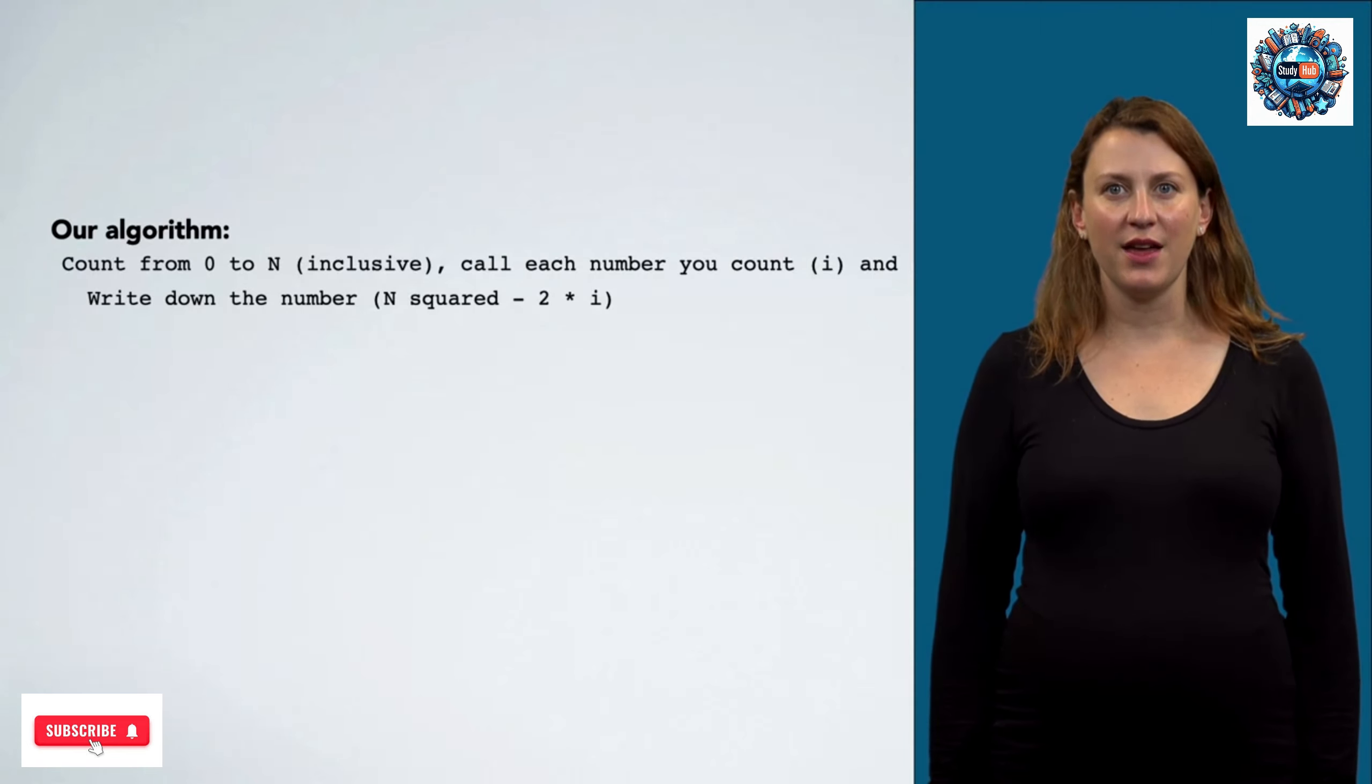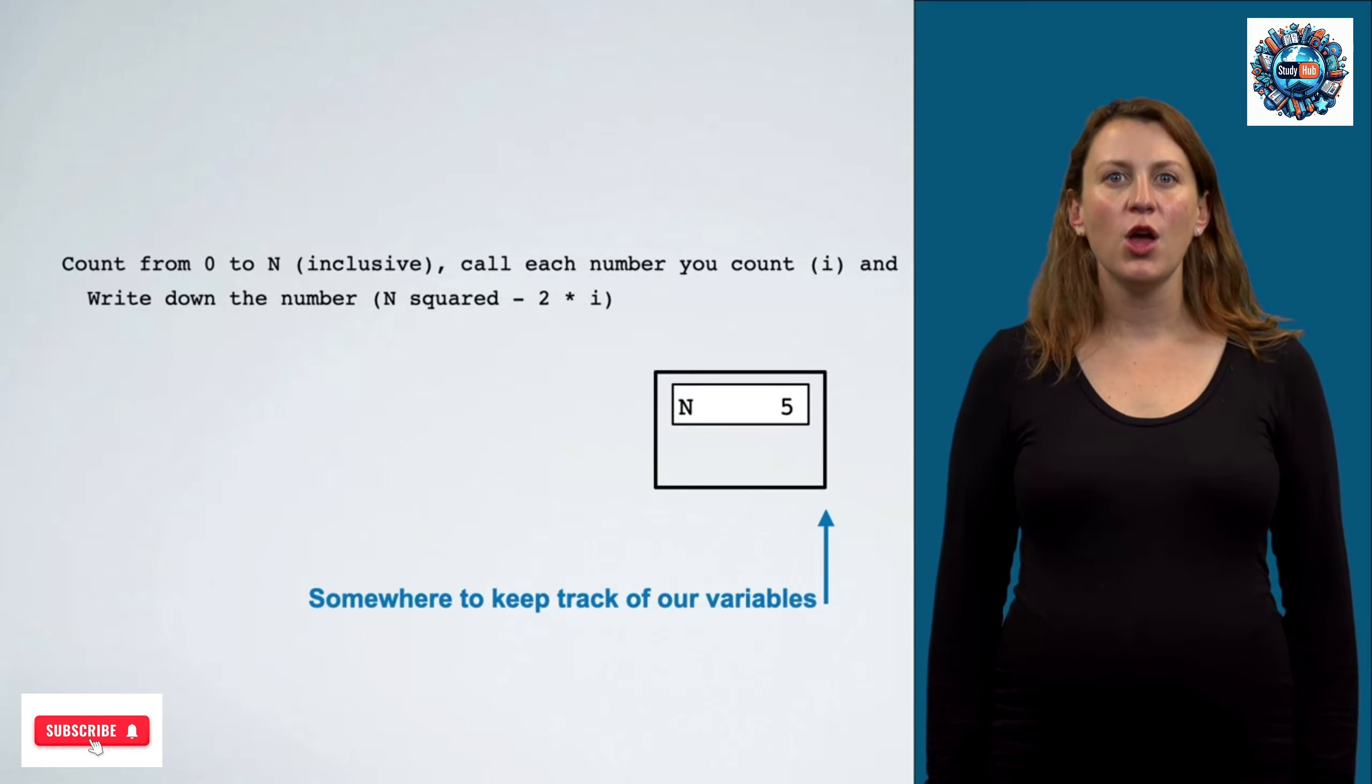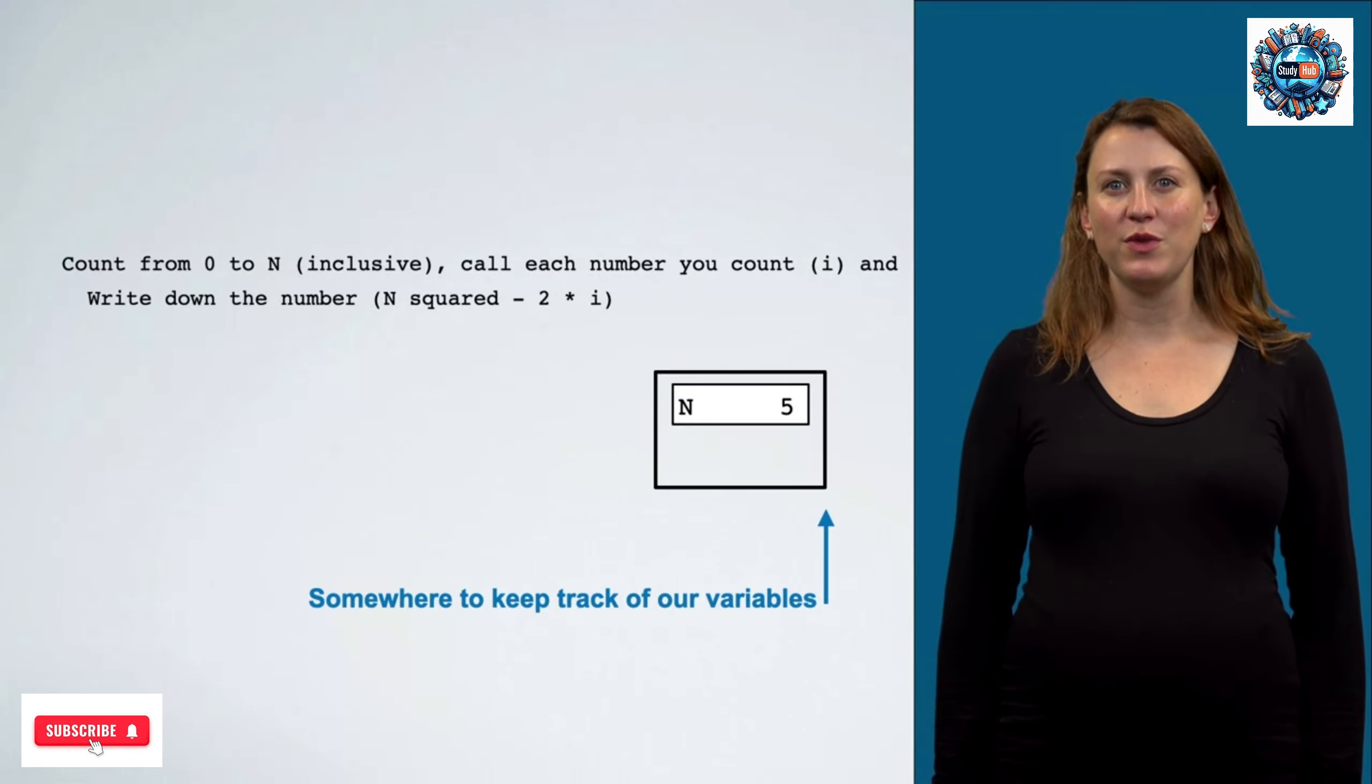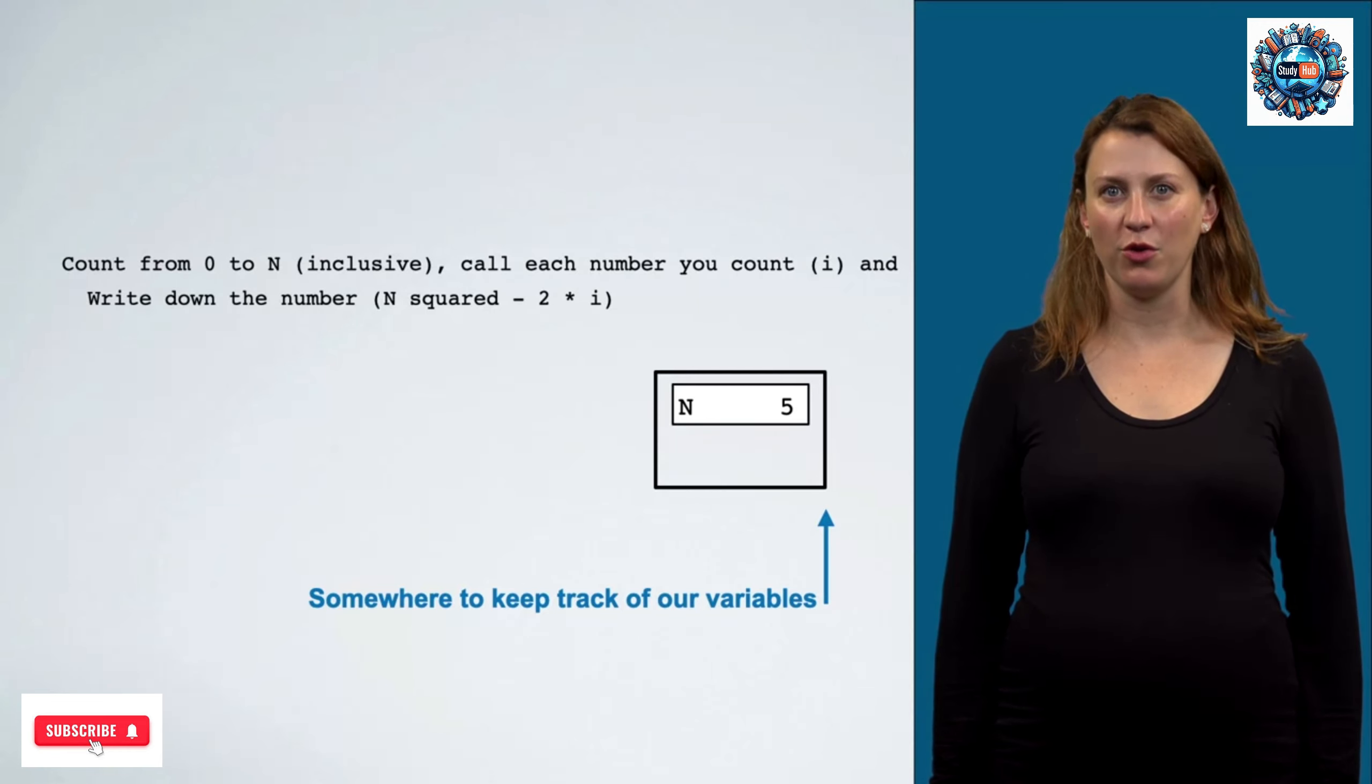We're going to be counting from 0 to n, and n is a variable. We're going to draw boxes for each of our variables to keep track of what value they currently have as we step through our algorithm.